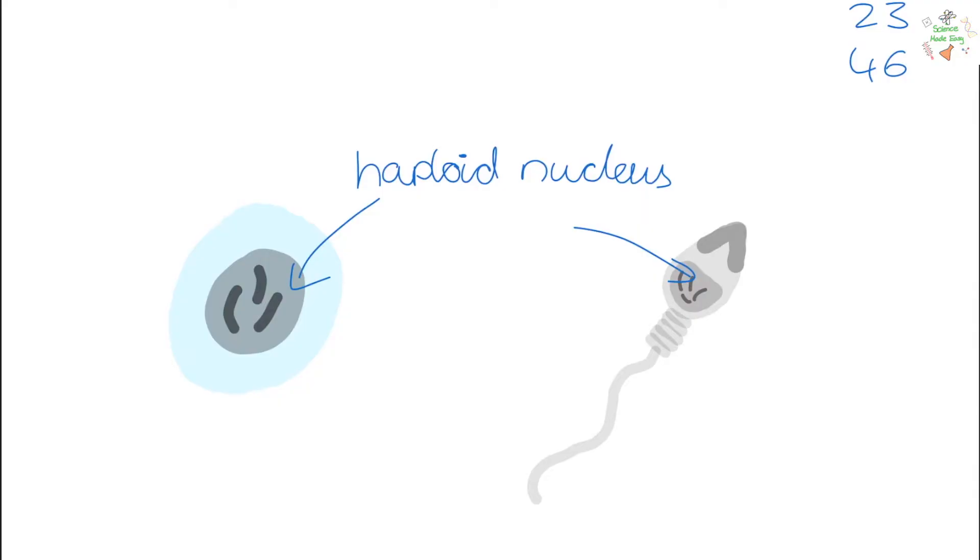The egg cell has lots of nutrients in its cytoplasm. This is so that it can feed the zygote when it is formed. Its membrane can also change structure so that after fertilisation it can stop any more sperm getting in.